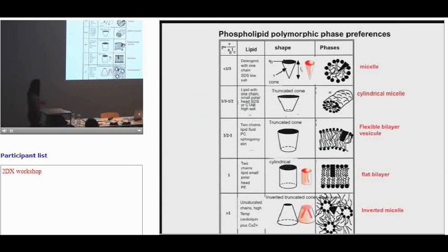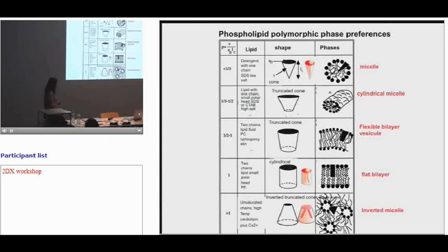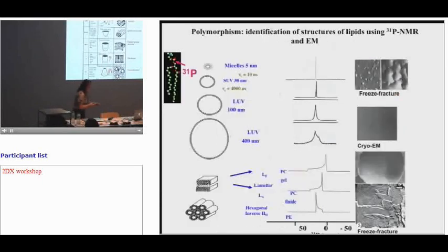The shape of the lipid is very important for polymorphism and phase behavior. A bulky lipid with a large head group will form micelles. A cylindrical lipid will form a flat bilayer. A lipid like cardiolipin with a small head group will form inverted micelles.